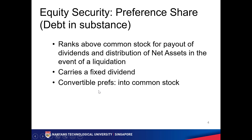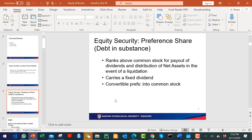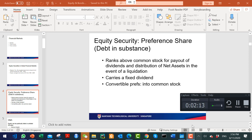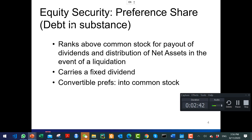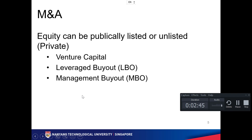Preference shares are actually ranked above common stock for dividend payout — that's why they are called preference shares. However, preference shares usually have a lower return than equity because they are like debt financing. The dividend is not tax deductible, and since it consists of a fixed dividend, the dividend is generally lower than equity.